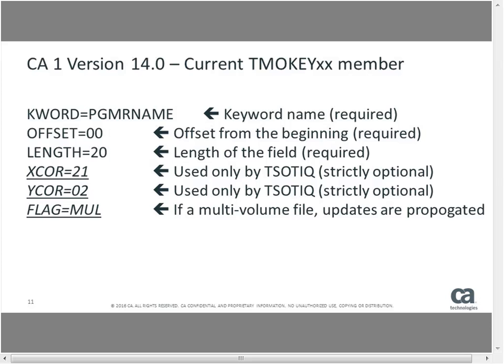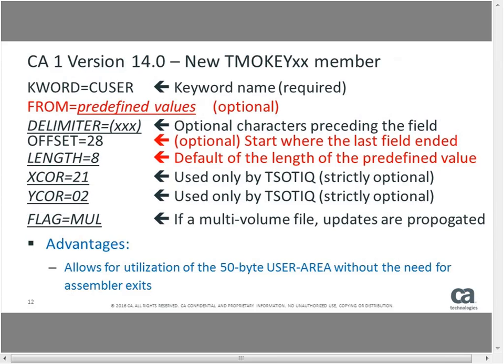We've changed the TMOTXX member so that there are now optional FROM= values from a list of predefined values. If you use FROM=, the length — depending on which keyword was specified — may be generated for you automatically. Also, the offset becomes optional because the assumption is that each field starts where the last field ended. So the only required keyword in the TMOTXX member is the KEYWORD= parameter, and if you want to use FROM= for one of our predefined values, we will get the information automatically.